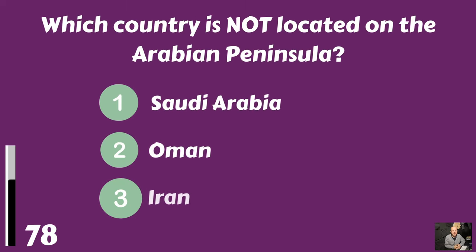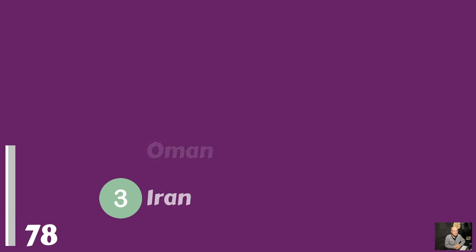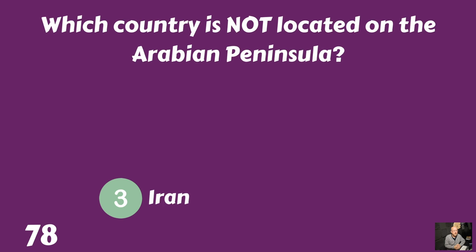Which country is not located on the Arabian Peninsula? Saudi Arabia, Oman, or Iran? Iran is not located on the Arabian Peninsula.